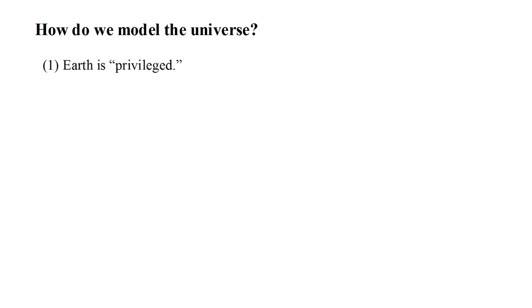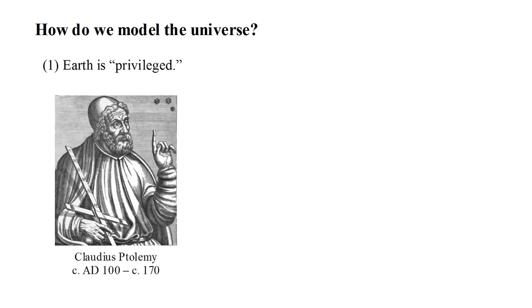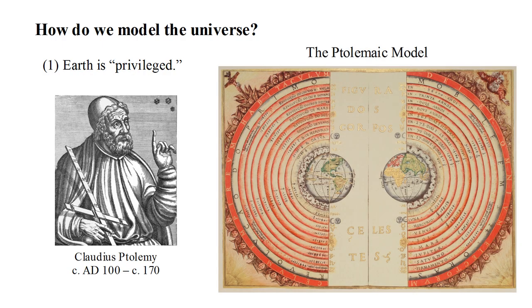In most ancient models, Earth was assumed to have a privileged position in the cosmos. The most successful of these models was due to Ptolemy. In the Ptolemaic model, Earth rests at the center of the universe. The sun, moon, planets, and stars follow daily orbits about the Earth. The peculiar motions of the planets relative to the stars is accounted for by additional smaller orbits, called epicycles.